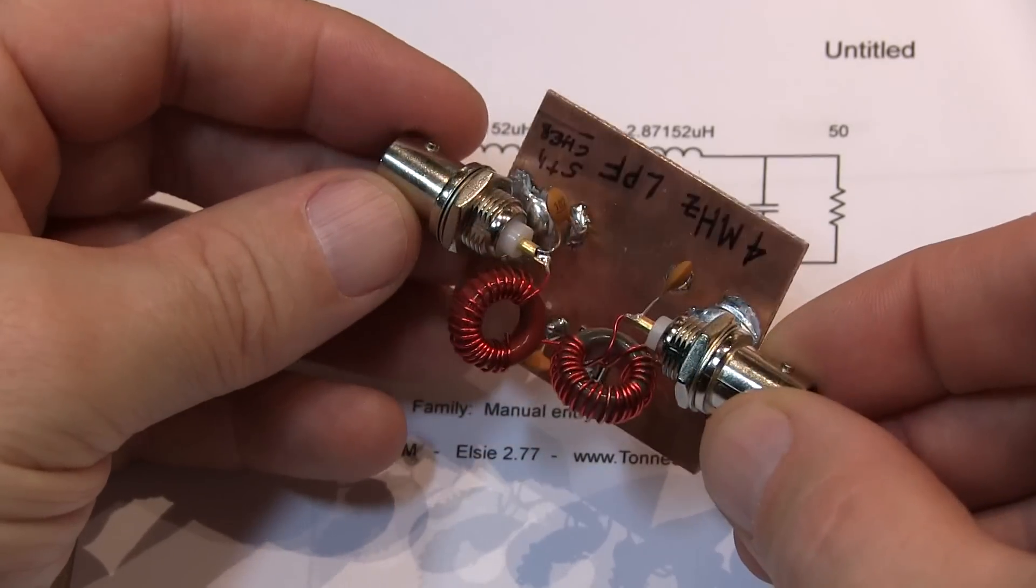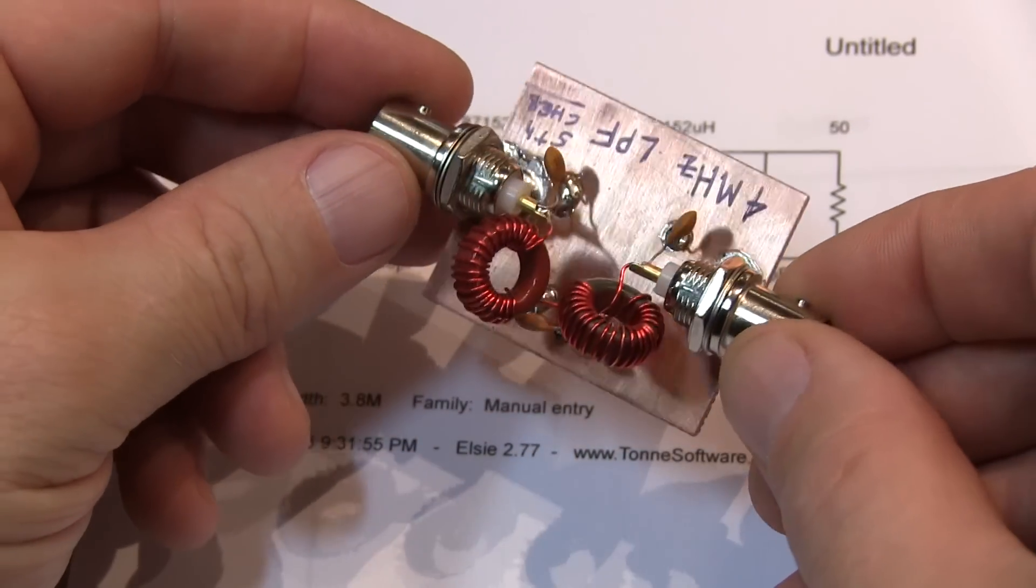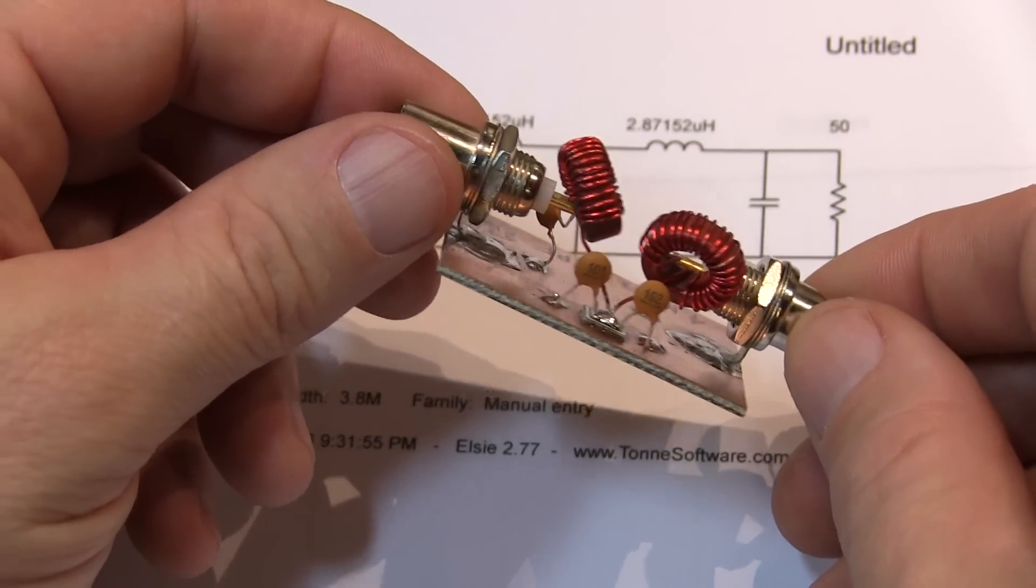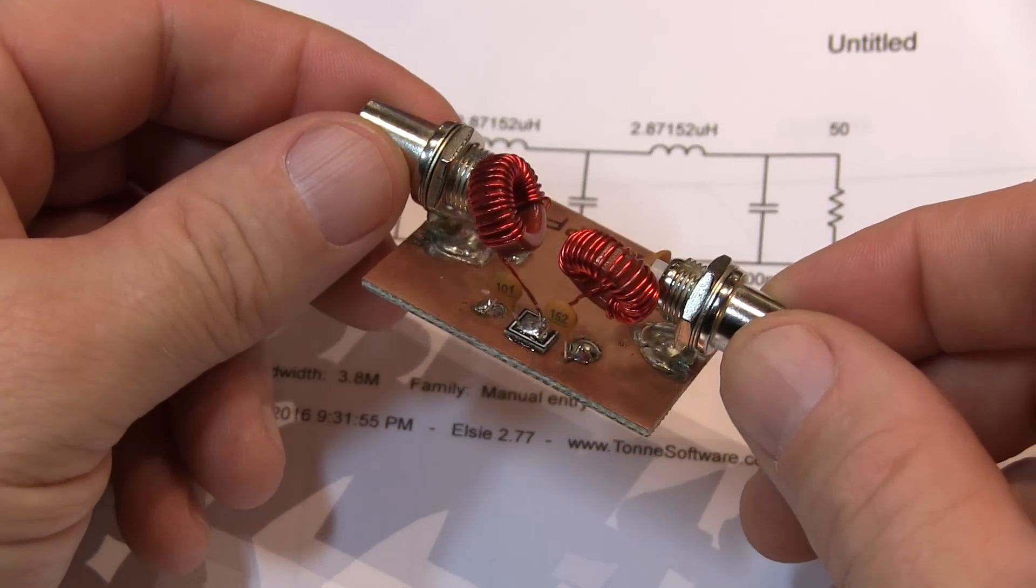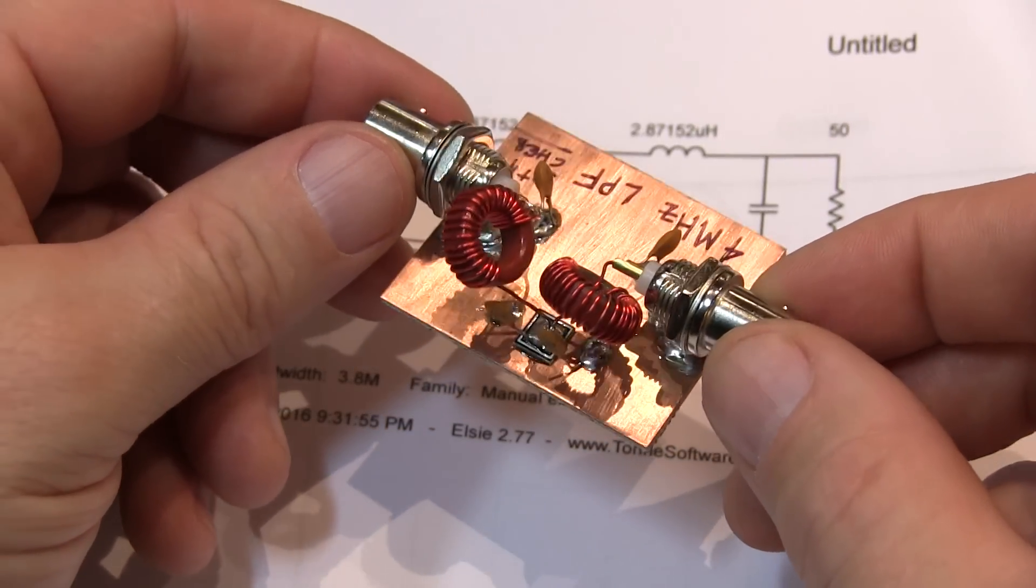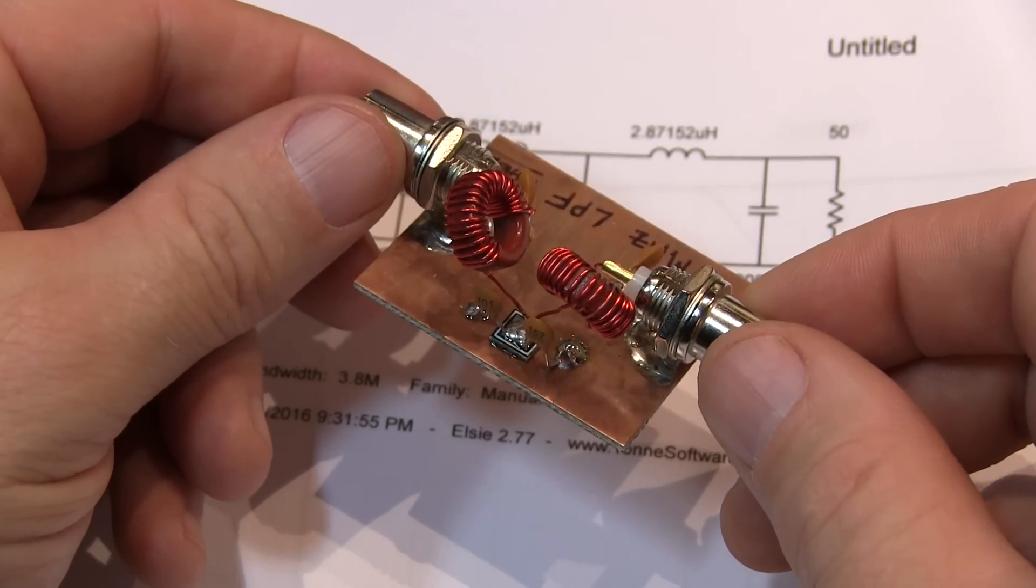Here's the low-pass filter I built. It's just a small fifth-order Chebyshev filter. And probably not enough attenuation to completely knock down that second harmonic to acceptable levels, but certainly good enough to use it as an example.